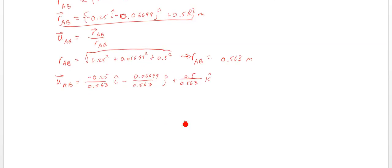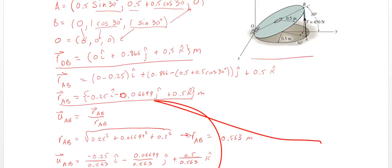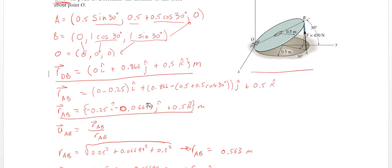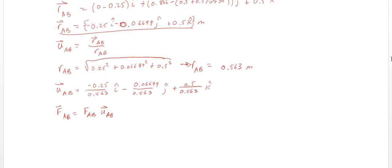So then, finally, we're going to have our force vector. Force vector AB is going to be our force AB times unit vector AB. If we go back up and look in our problem statement, our problem statement is going to be that force is 450 newtons. So we're going to get rid of my crazy scribbling up there.